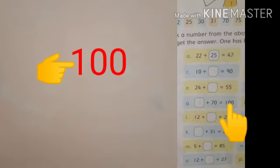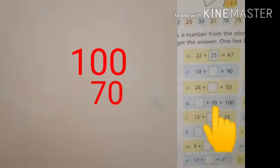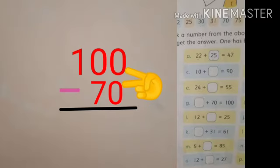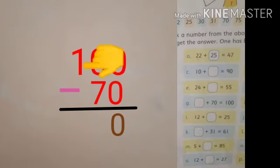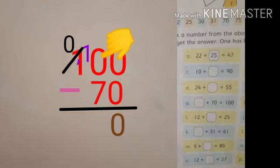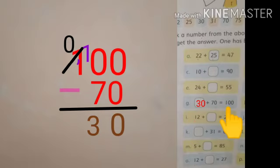Part G is: empty box plus 70 is equal to 100. Ab humne maloom karna hai ki 70 mein aisa kaun sa digit plus kiya jaye ki hamare paas answer aa jaye 100. Yahan bhi hum 100 ki value jo answer mein hai wo hum upar write karenge aur 70 jo given number hai wo hum uske neeche write karenge. Ab hum 100 mein se 70 ko minus kar denge. 0 mein se 0 minus kiya — answer is 0. 0 mein se 7 minus nahi ho sakta — 0 apne saamne wale digit 1 se carry le lega. Ab hamare paas 0 ki value ho jayegi 10 aur 1 ki value ho jayegi 0. 10 mein se 7 minus karenge to hamare paas answer aa jayega 30. This is our answer — we have to write 30 in the box. 30 plus 70 is equal to 100.